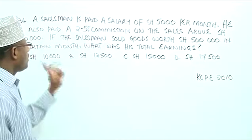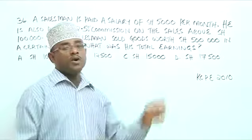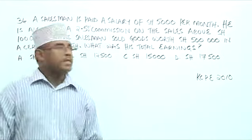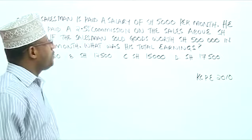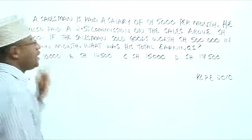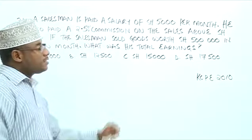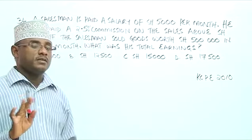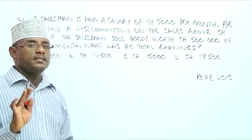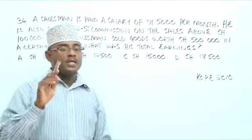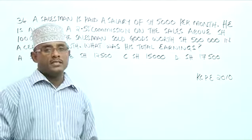So, at the end of the month, his total earnings are going to be the salary plus the commissions. And how much sales did he make? He made $500,000. So, $500,000 is above $100,000. So, let us remove $100,000 because he's not getting commission on the first $100,000. And see how much is going to remain. Whatever is going to remain, now he's going to get commission out of that.